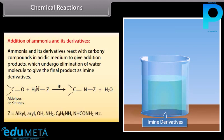Z can be alkyl, aryl, OH, NH2, C6H5NH, NHCONH2, etc.